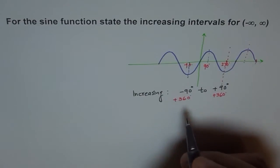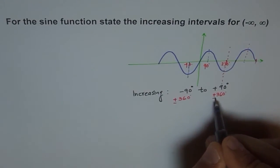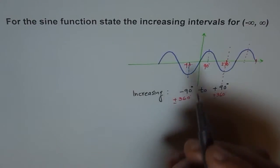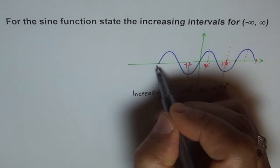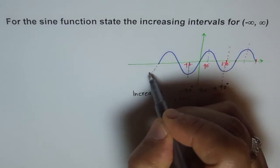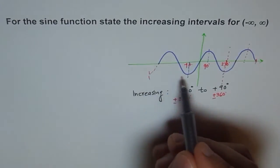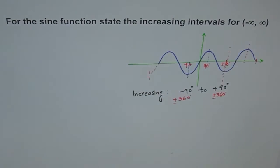Because even if you see from this side, the next interval will be from here, which would be minus 360 degrees. So it is plus or minus 360 degrees.